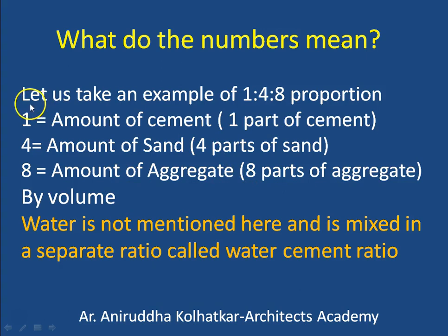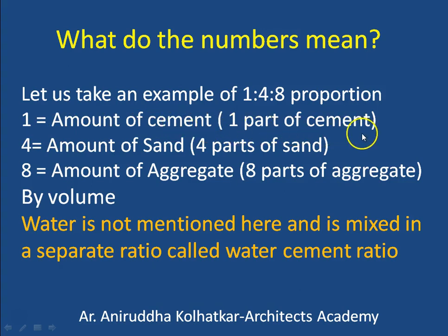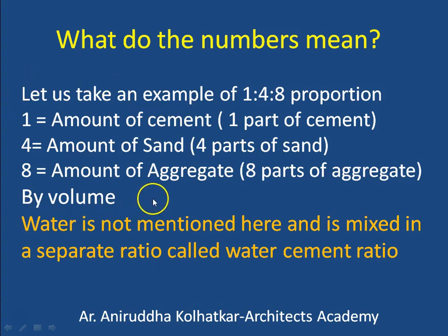Let us take the example of 1:4:8 concrete. In this proportion, 1 represents the amount of cement — that means one part of cement. 4 represents the amount of sand — that means four parts of sand. And 8 represents the amount of aggregate or stone pieces — that is eight parts of aggregate. This is the type of proportion mentioned when we prepare concrete by the volumetric method.